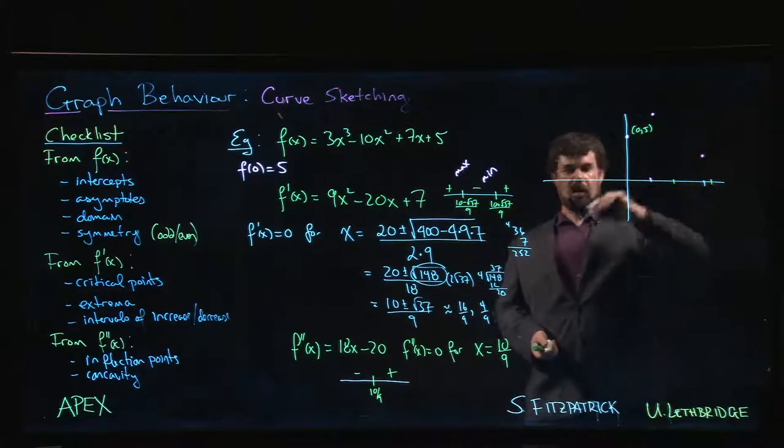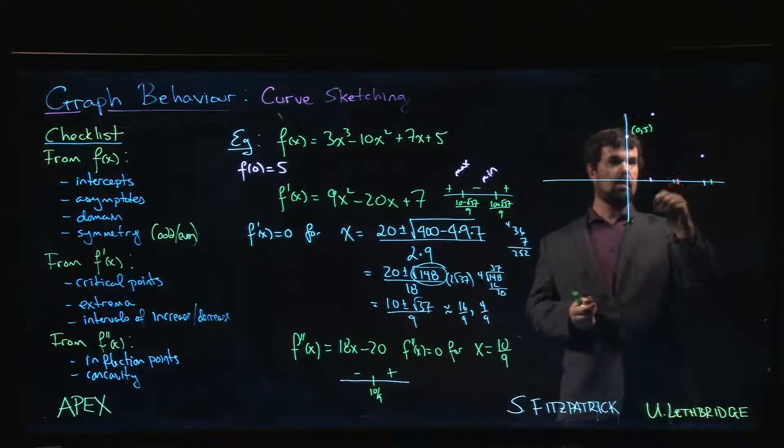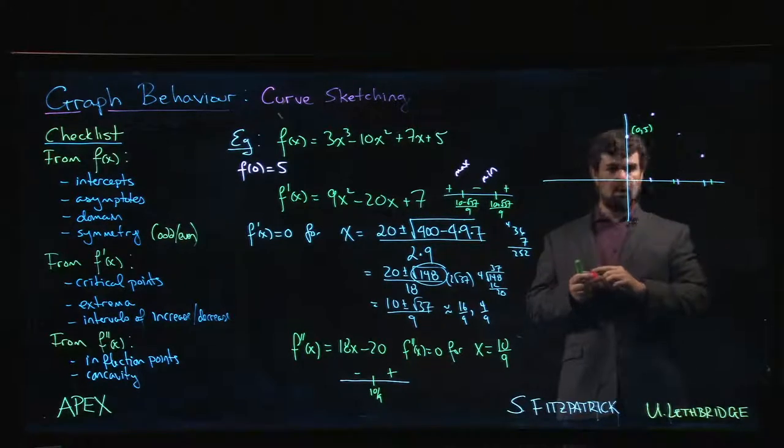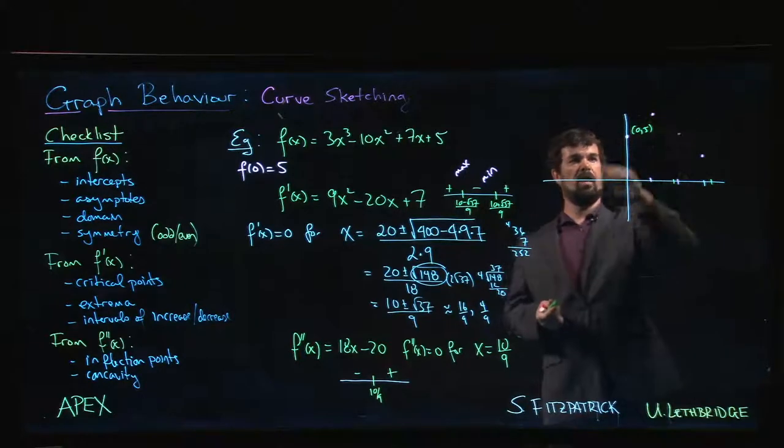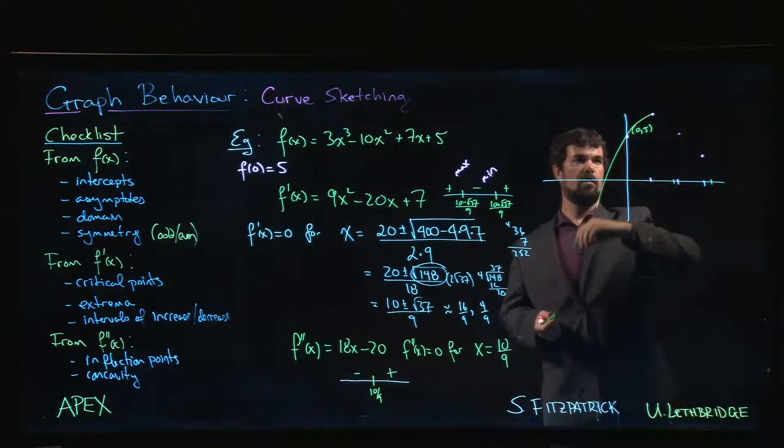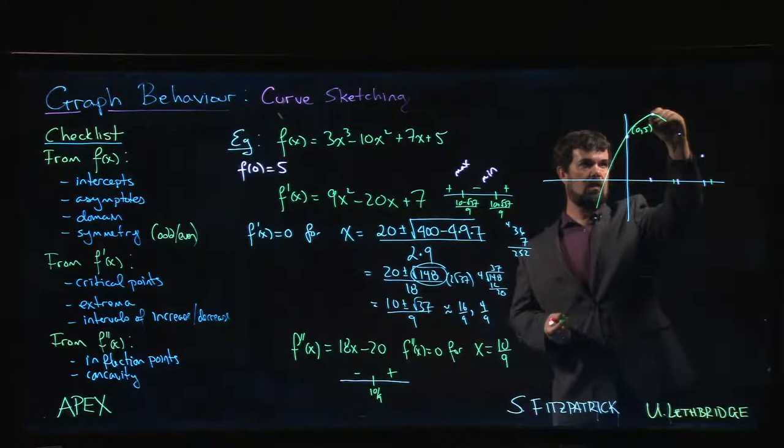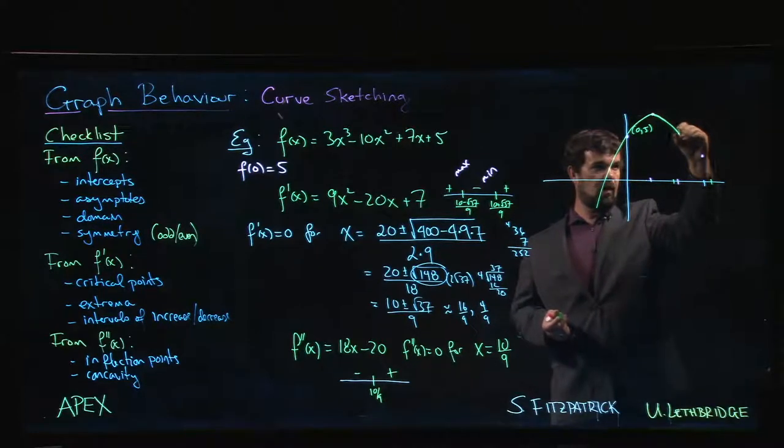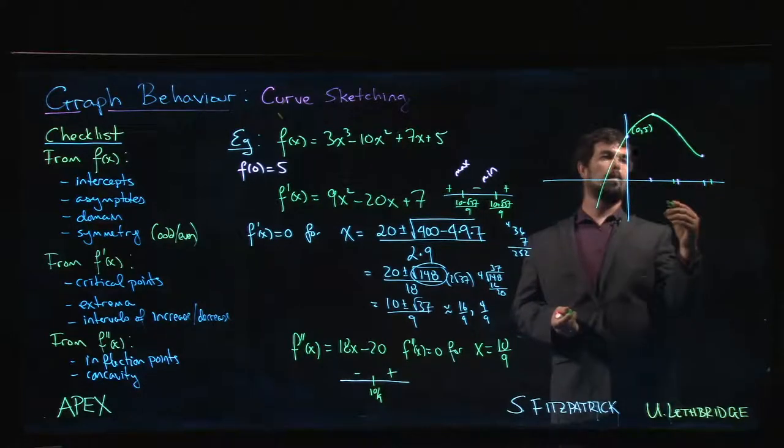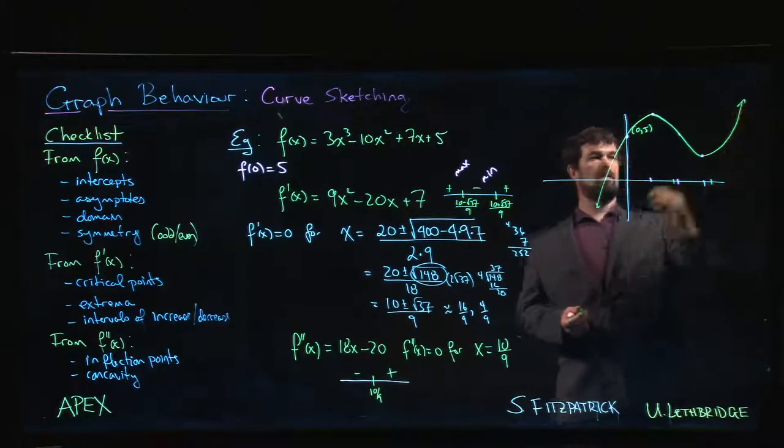Now we know that our function is going to be increasing from minus infinity up to this first critical number, decreasing between the two critical numbers, and then increasing again. We also know it's going to be—let's mark off that inflection point, somewhere around here. What we're going to get is something which is increasing but concave down until we hit that, so we're going to go like this. We hit our maximum, now we're decreasing, still concave down. We hit our inflection point, now we're concave up but decreasing till we hit our minimum. Now we're concave up and increasing.